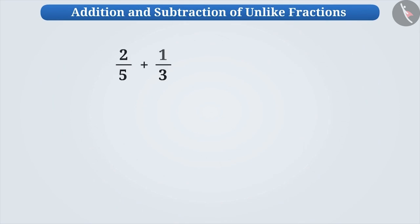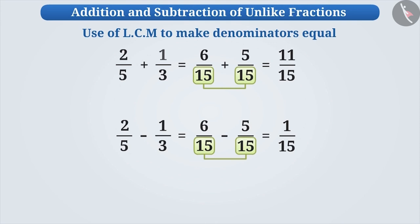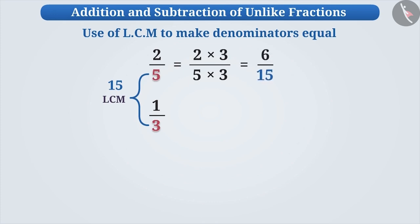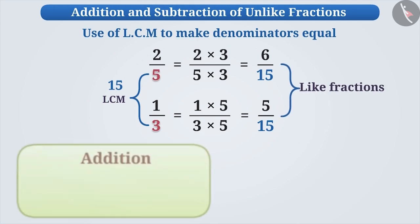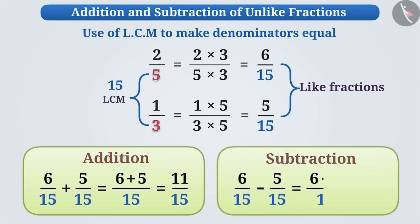Hence, in order to perform the addition and subtraction of unlike fractions, we need to make their denominators equal. Use of LCM is the simplest method to do this. For example, the LCM of denominator 5 of 2 by 5 and 3 of 1 by 3 is 15. Multiplying the numerator and denominator accordingly, we get equivalent fractions 6 by 15 and 5 by 15. Since the denominators of both the equivalent fractions are equal, both are like fractions. To find the sum, we add the numerators and keep the denominators as it is. Similarly, to find the difference, we subtract the numerators and the denominator is kept as it is.